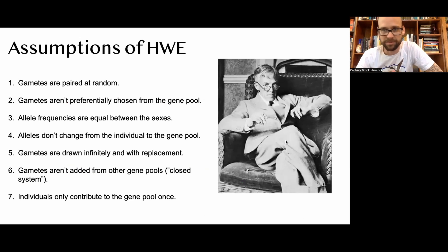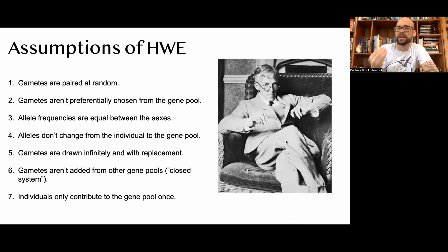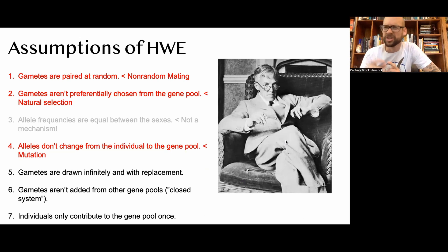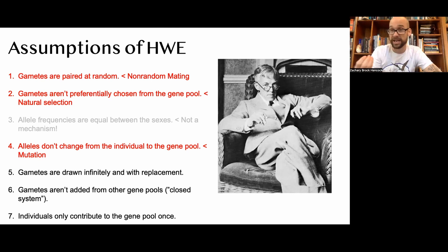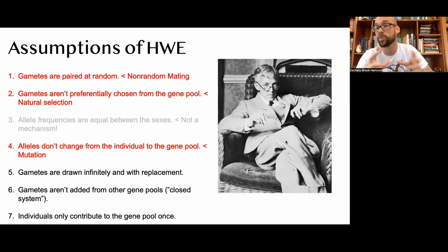We always start these episodes by talking about the assumptions of Hardy-Weinberg, because all of the mechanisms of evolution are derived from violations of these assumptions. The first is that gametes are paired at random — when they're not, we call this non-random mating. It's a pretty weak evolutionary force that doesn't generally lead to sustained change on its own, but it can change both allele frequencies and genotype frequencies.